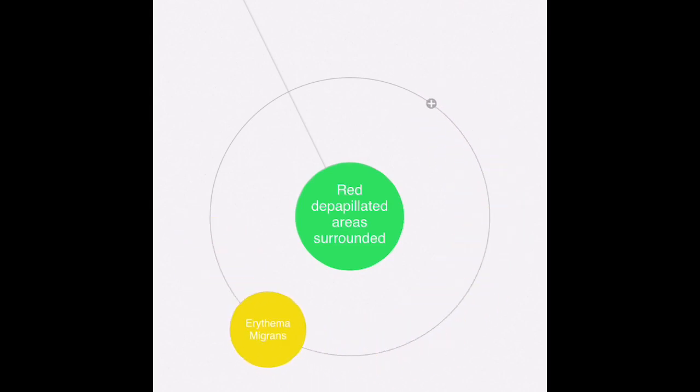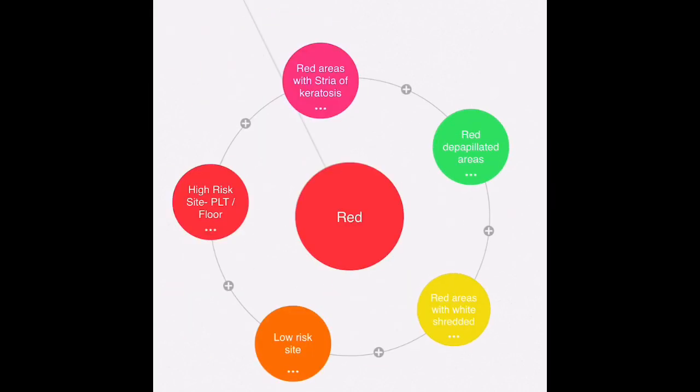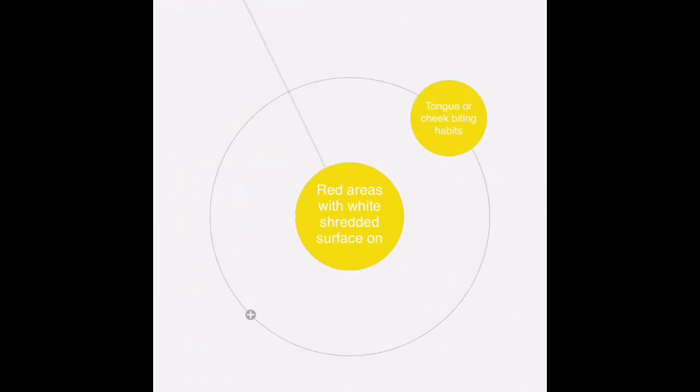The next one consists of red areas with white shredded surface. If this is noticed on the border of the tongue or on the cheek, then most likely it's resulting from a tongue or cheek biting habit.